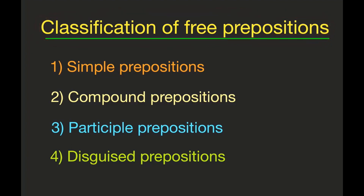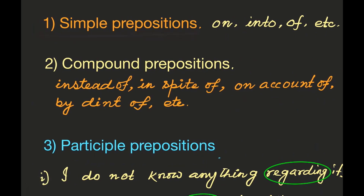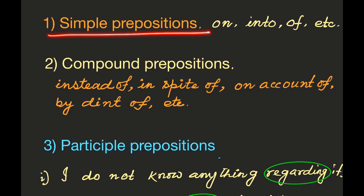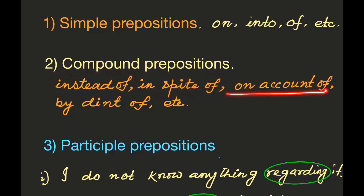Free prepositions are broadly classified into four groups: number one, simple prepositions; number two, compound prepositions; number three, participle prepositions; and number four, disguised prepositions. Simple prepositions are single words like 'on,' 'in,' 'of,' etc. Compound prepositions are also called group prepositions — they are a group of words used as a preposition, such as 'in spite of,' 'on account of,' 'by dint of,' etc.